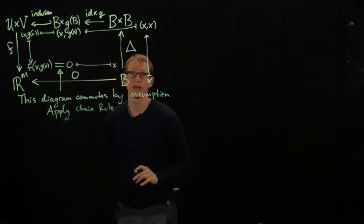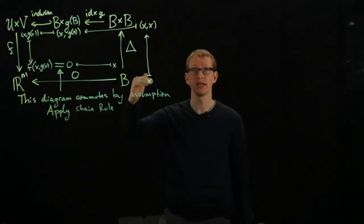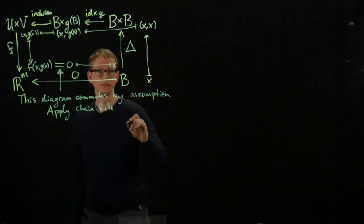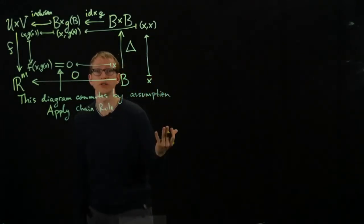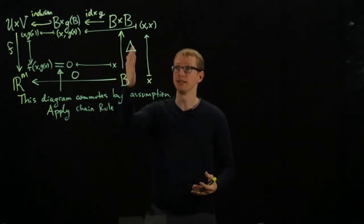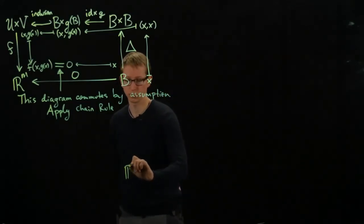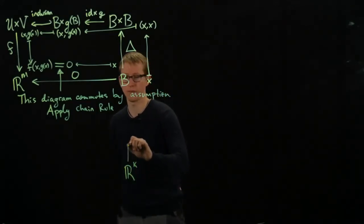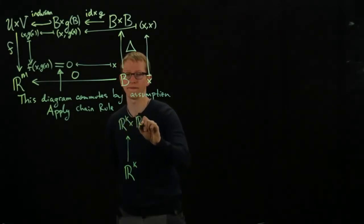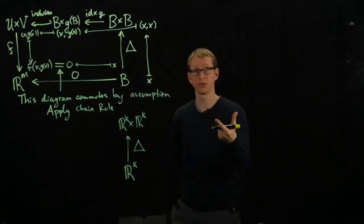And what happens when we apply the chain rule? Well, this is a linear transformation. It just takes the vector and produces it twice. And so we get, if we wanted to, we can get a matrix associated to this, but we don't have to. D applied to a linear transformation is always that linear transformation. So here we have RK mapping into RK cross RK. And it's exactly this diagonal map again. It takes a vector V and produces it twice.